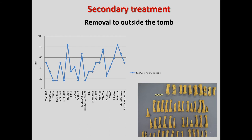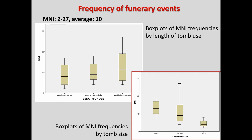Sometimes the most prominent bones were taken, leaving behind only small hand and foot bones. Other times we had the opposite — cranium and long bones were kept inside while the small ones had been removed. The extensive bone removal attested suggests that the frequency of funerary events is of course higher, much higher probably, than what the MNI suggests. In Boudini we had an average MNI of 10 people per tomb, but this does not correlate with length of use of the tomb, nor even with tomb size, indicating significant removal and possibly other social factors.